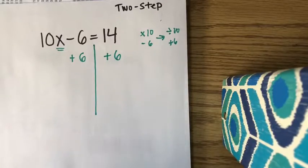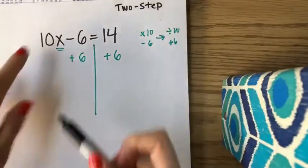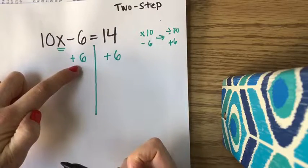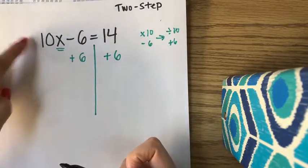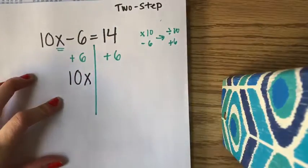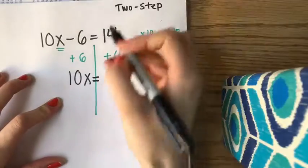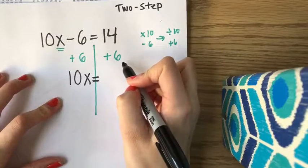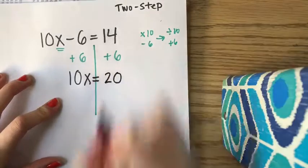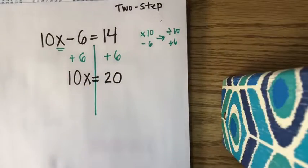Now I see what I have left. So when I add 6 to the left-hand side, the subtraction of 6 and the addition of 6 cancel each other out, so I'm just left with 10x. And that is going to balance with what happens when I add 6 on the other side. 14 plus 6, that's 20. So I'm done with my first step.